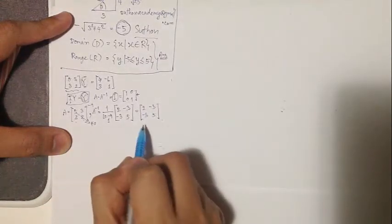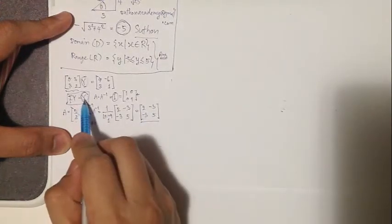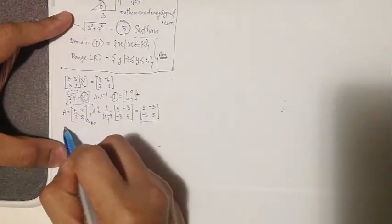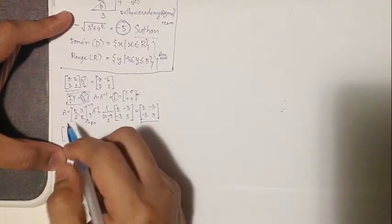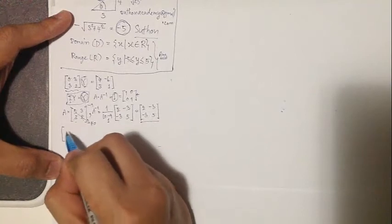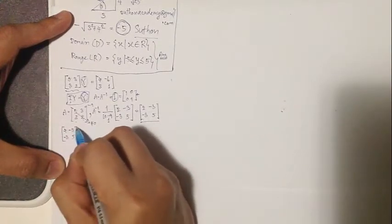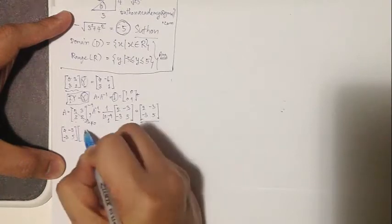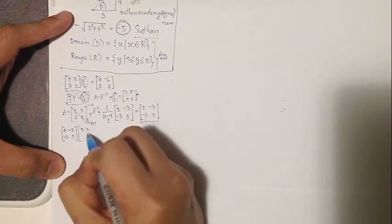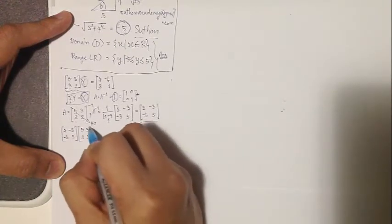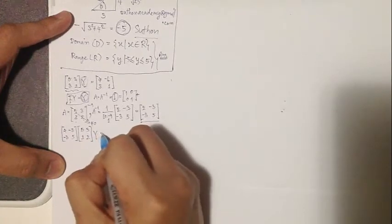So we multiply this inverse matrix by matrix Y, so it will become [2 -3; -3 5] times the matrix [5 3; 3 2].